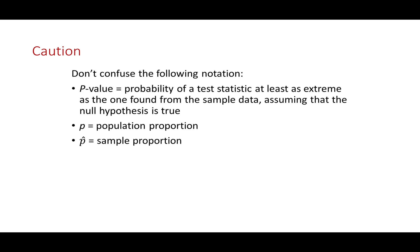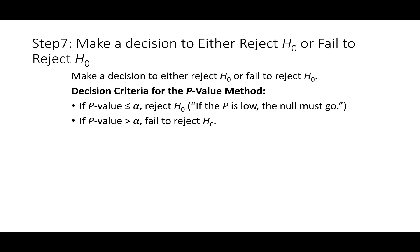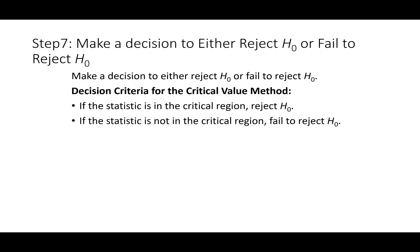After finding the p-value, compare it with alpha — the significance level. If p-value is less than or equal to alpha, reject the null hypothesis. Remember: p is low, null must go. If p-value is greater than alpha, fail to reject the null hypothesis. Similarly, for the critical value method: if the test statistic is in the critical region, reject the null hypothesis; if not in the critical region, fail to reject.